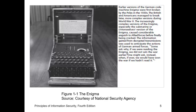This is an earlier version of the German coding machine called Enigma. This machine was used to send coded messages between army units and headquarters to ensure that no one could understand the commands being sent to each unit. The Poles managed to break that code in the 1930s, and then the British and Americans also managed to break and understand the code.